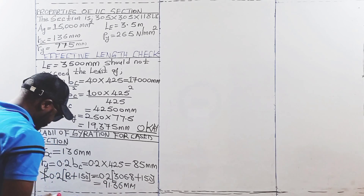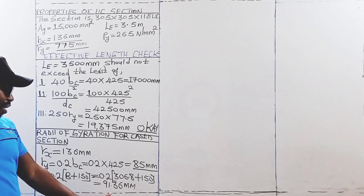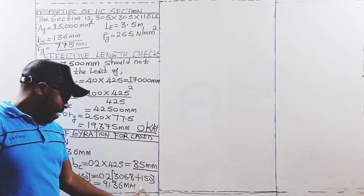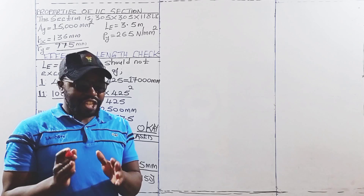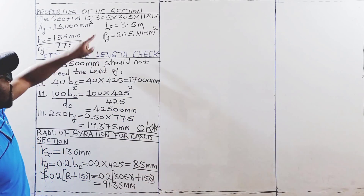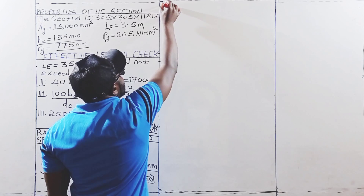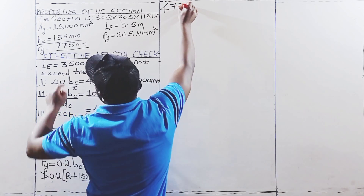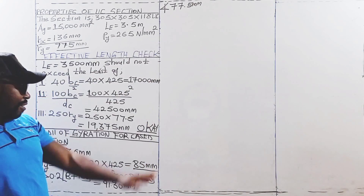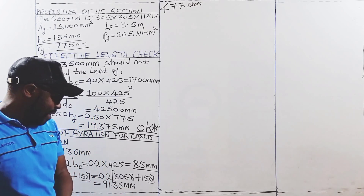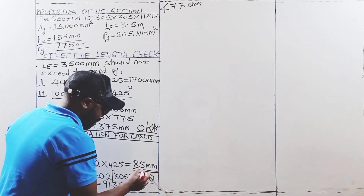The radius of gyration of 85 millimeters has not exceeded 91.36 millimeters. Additionally, it should not be greater than that of the uncased section — that is the 305 by 305 by 118 UC — which is 77.5 millimeters. Since 85 millimeters falls between 77.5 and 91.36 millimeters, the radius of gyration about the YY axis is taken as 85 millimeters, and the section is okay.